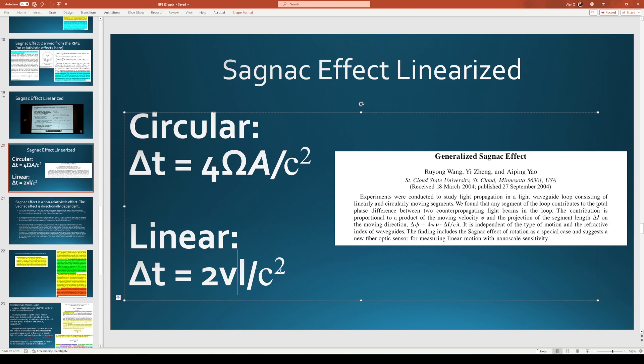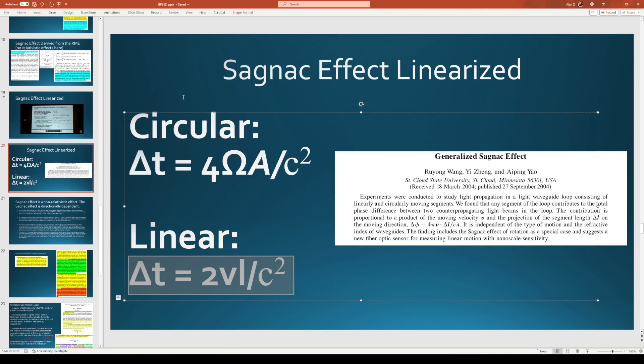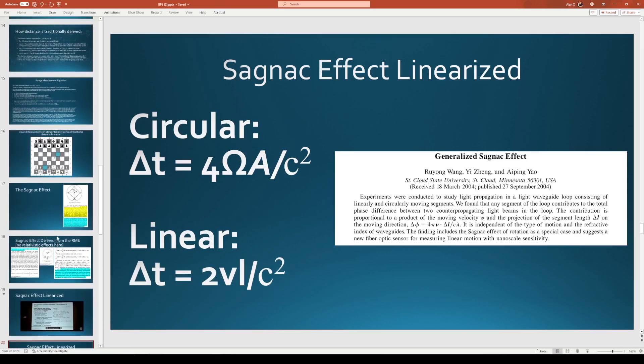And that accurately derives the prediction for the Sagnac effect. And what he noticed, too, was that when you apply this same equation to a circular Sagnac device, it actually derives the same exact prediction. And through GPS, we found that any segment of loop contributes to the total phase difference between the counterpropagating light beams. The contribution is proportional to the product of the moving velocity in the projection of the segment length delta L on the moving direction.